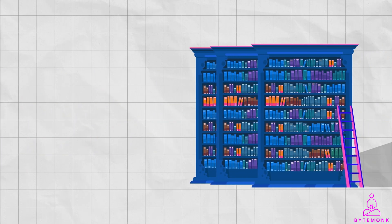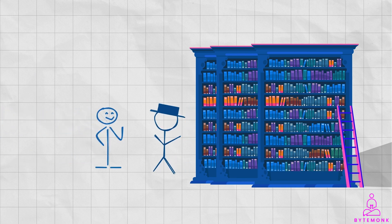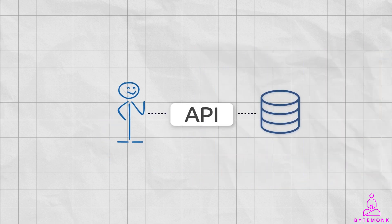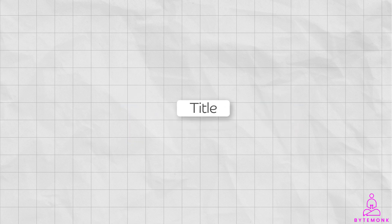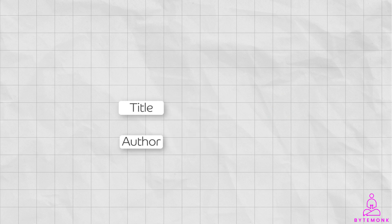Imagine a library full of books. You can go to the library and ask the librarian for a specific book, or you can browse the shelves and see what's interesting. Traditional APIs are like libraries in that they allow developers to request data. However, traditional APIs are not as flexible as GraphQL. For example, if you want to get the title and author of a book, you would have to make two separate requests to a traditional API.